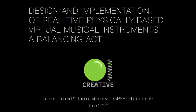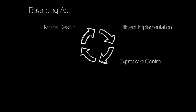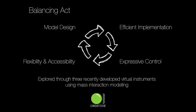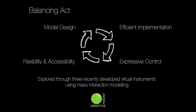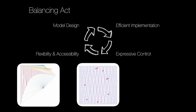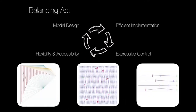In this contribution, we discuss the multifaceted aspects of designing and implementing real-time physically-based virtual musical instruments. This involves a balancing act between model design, efficient implementation, expressive control, and accessibility. We illustrate these aspects through three recently developed virtual musical instruments using mass interaction modeling: a virtual harp, a bowed mesh, and a bowed string model. We present a new element for mass interaction modeling called the proxy module.